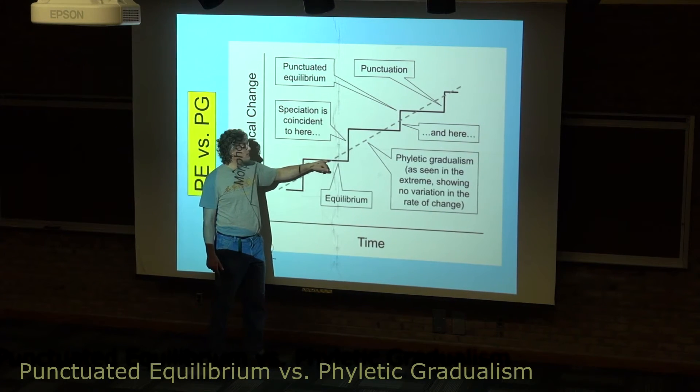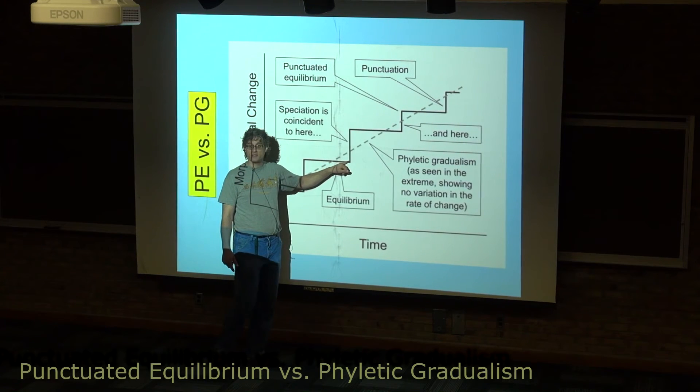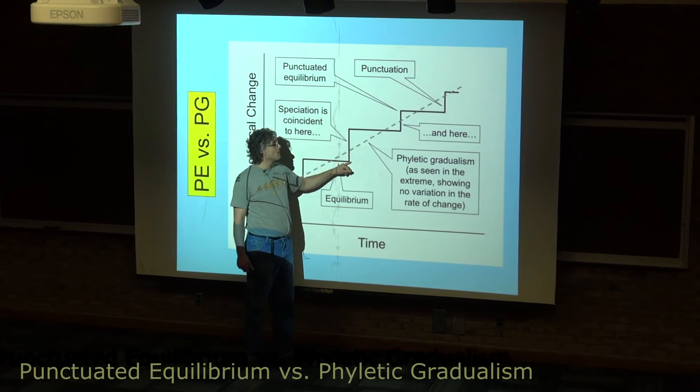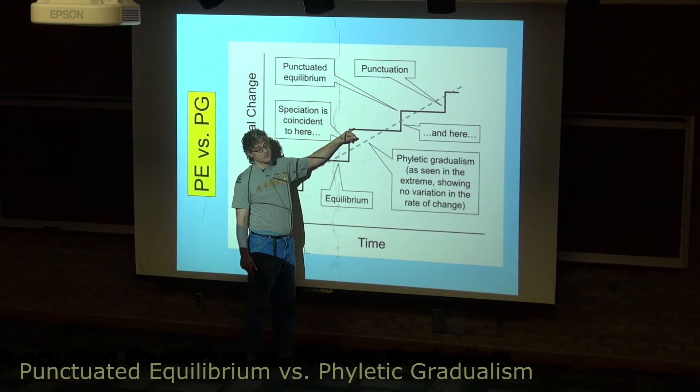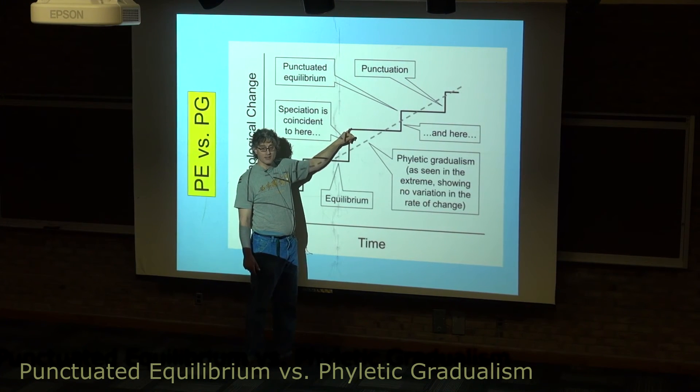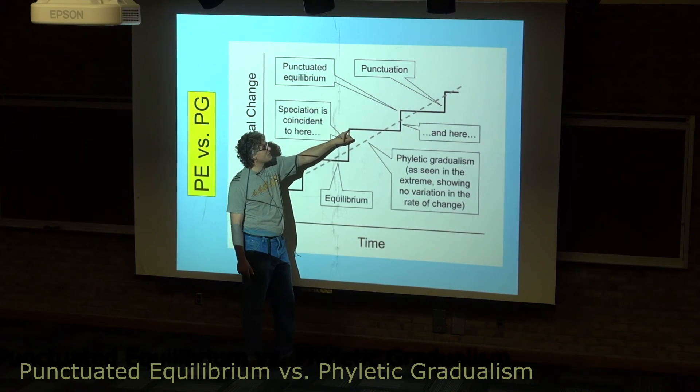These are followed by periods of stasis where the population is large and successful, not changing much. Then peripheral isolates undergo rapid changes, again occurring over long periods of time in terms of our own lives, but not as far as the fossil record is concerned.